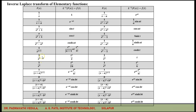Using the formula L⁻¹{1/s^(n+1)} = tⁿ/n!, we can find inverse Laplace transforms of 1/s³, 1/s², 1/s⁵, 1/s⁴. The power of s is n+1, so the power of t is n — one less than the power of s, divided by n factorial. For example, L⁻¹{1/s³} = t²/2!, L⁻¹{1/s⁵} = t⁴/4! = t⁴/24, and L⁻¹{1/s⁴} = t³/3! = t³/6.